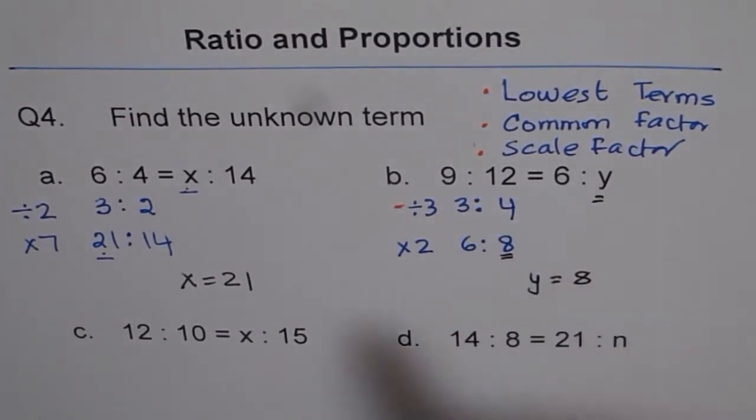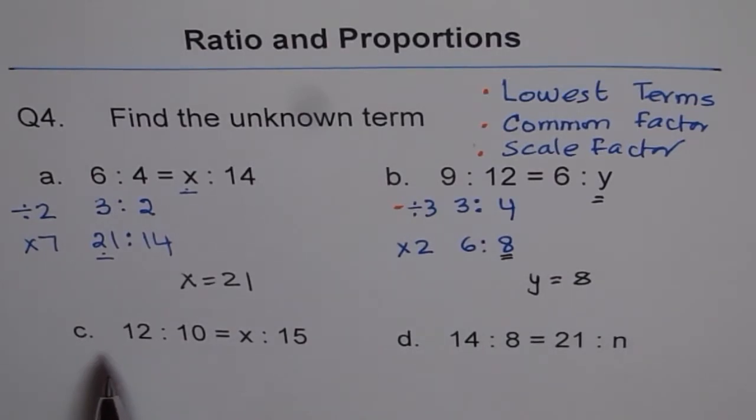So follow these 3 steps to do these questions. Now for you, the question is C: 12 is to 10 equals to x is to 15. Copy this question and follow these steps to do that. 14 is to 8 equals to 21 is to n. So the variable n you have to find. There is no direct relationship between 14 and 21, so you need to write them in the lowest terms.